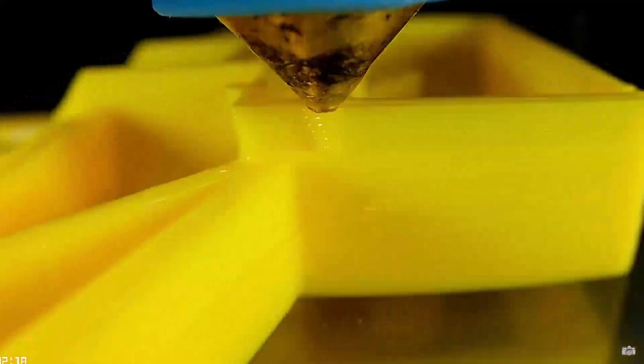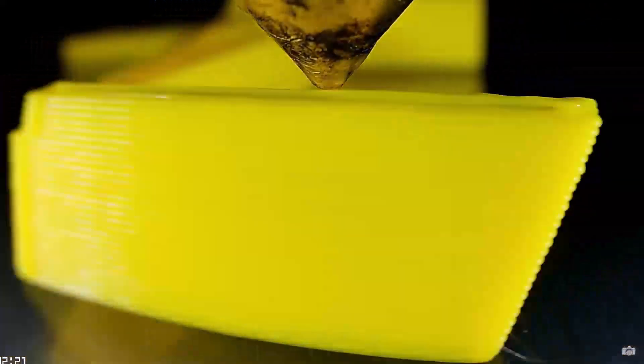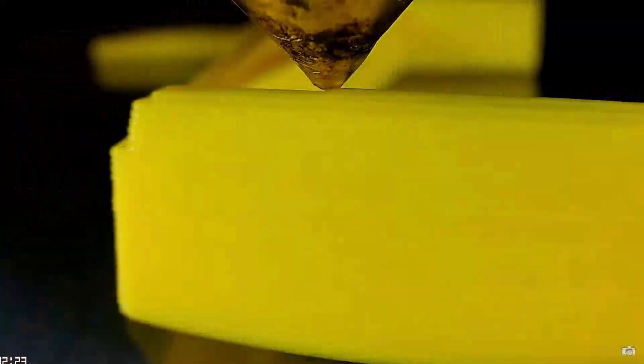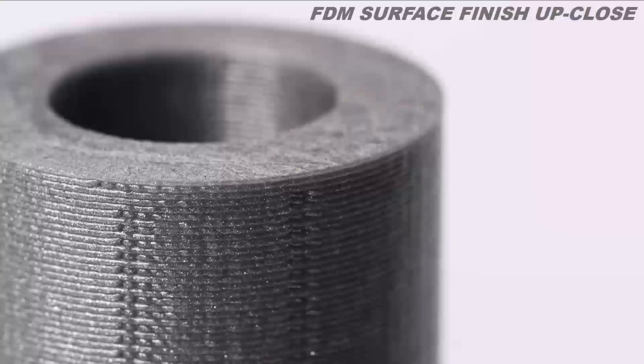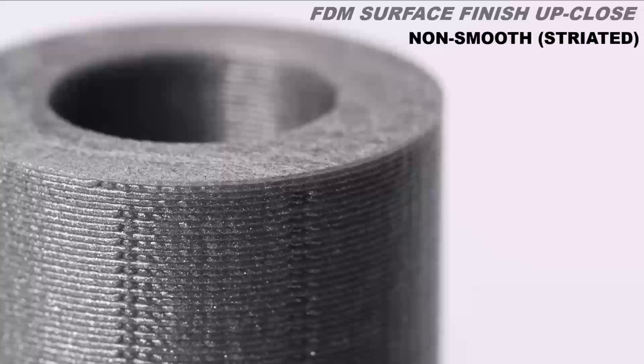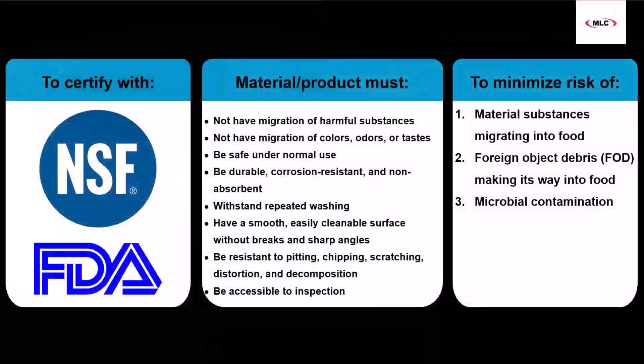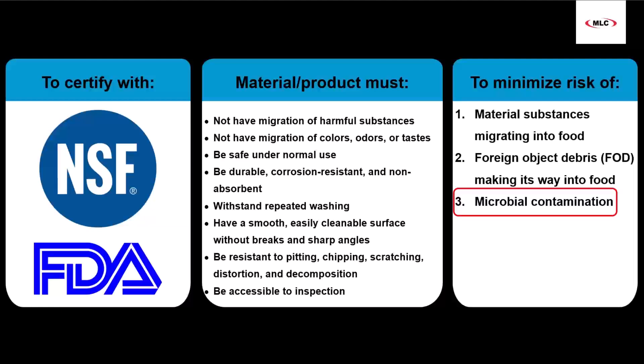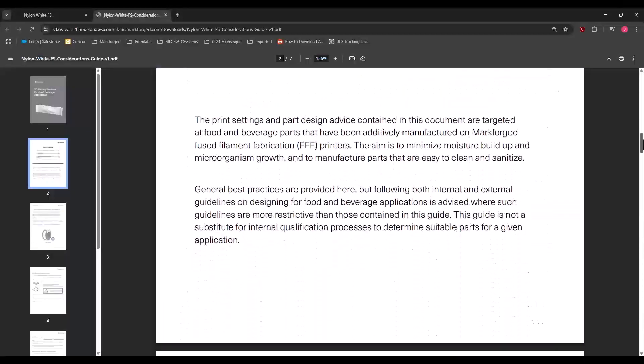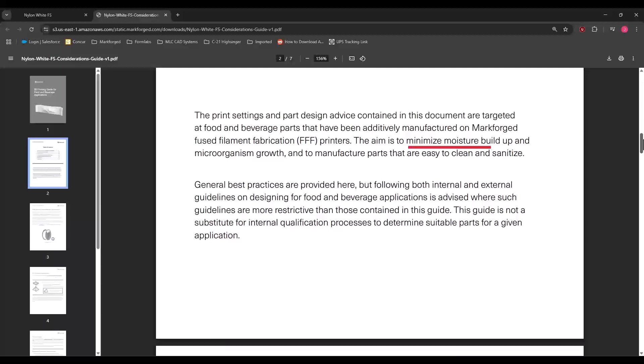Migration risks are particularly important to keep in mind with FDM parts since they feature striated surfaces due to the layer-by-layer building action. This produces a non-smooth, semi-porous surface, both of which interfere with the FDA's food-safe criteria. One of the risk factors I mentioned earlier is microbial contamination. Because the surface is hard to clean, there is a high risk for microbial growth on FDM parts.